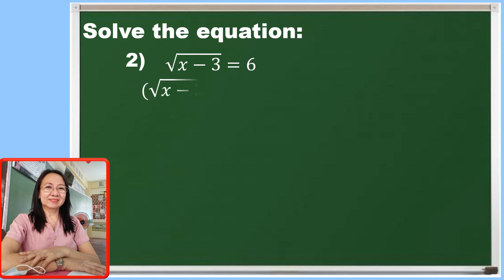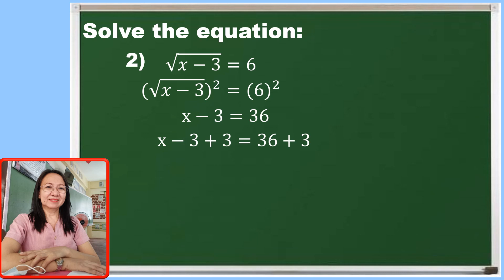So let us raise both sides of the equation to 2. The square root of x minus 3 squared is x minus 3, and 6 squared is 36. This is simplified to x minus 3 is equal to 36. Let us simplify by applying the addition property of equality by adding both sides by 3, so that negative 3 plus 3 on the left side is eliminated. And 36 plus 3 is 39. So x is equal to 39.